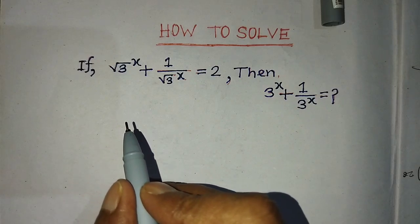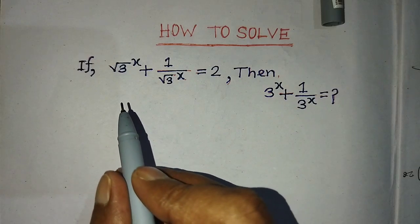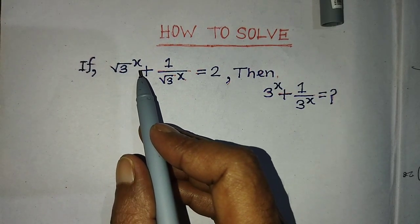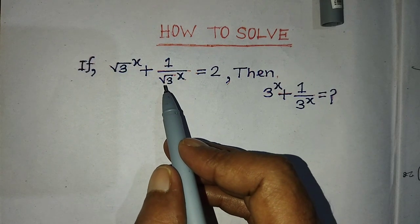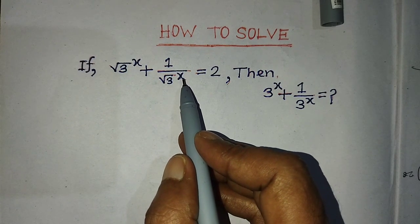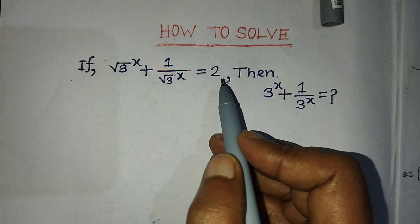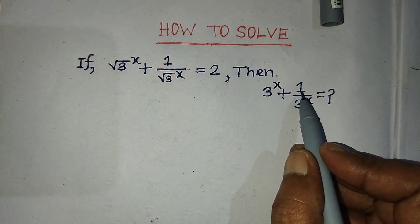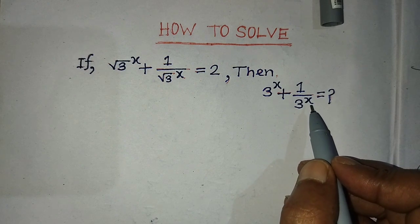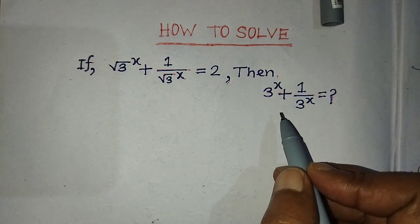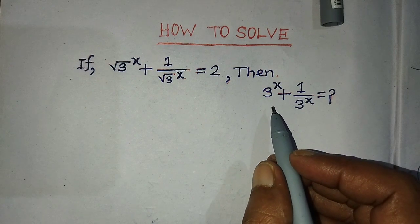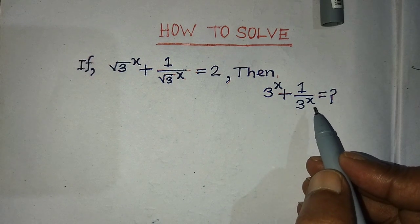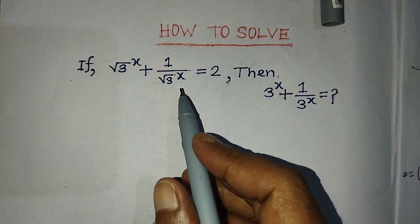Hi guys, welcome back to my channel Early Maths Blog. Today our question is: if root over of 3, whole to the power x, plus 1 over root over of 3, whole to the power x, is equal to 2, then find the value of 3 to the power x plus 1 over 3 to the power x. Today in this video, I will tell you how to find the value of 3 to the power x plus 1 over 3 to the power x from the given equation.